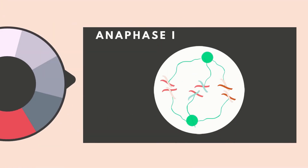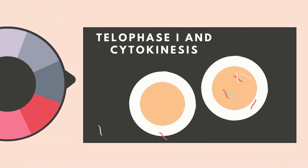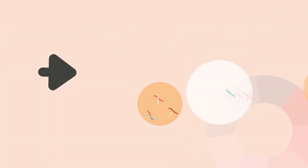Anaphase I is the next phase. Spindle fibers contract and split the bivalent. Homologous chromosomes move to opposite poles of the cell. The last phase in this stage is Telophase I, where chromosomes decondense and the cell divides to form two haploid daughter cells.